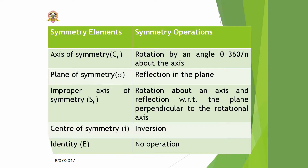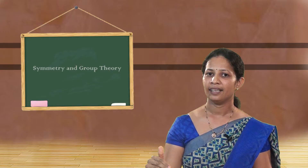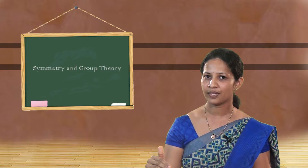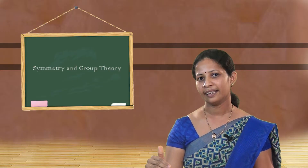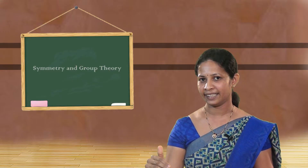There are totally five symmetry elements. The first one is the axis of symmetry, the second is the plane of symmetry, the third is the improper axis of symmetry, the fourth is the center of symmetry, and the last one is identity.